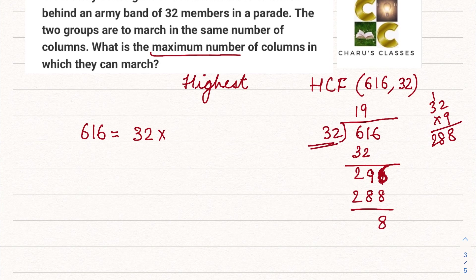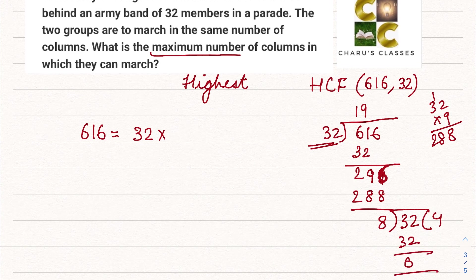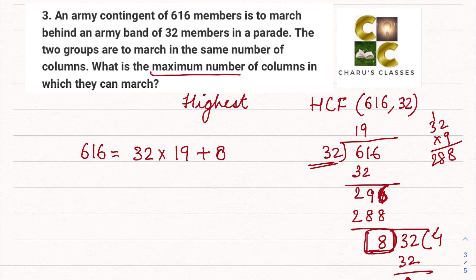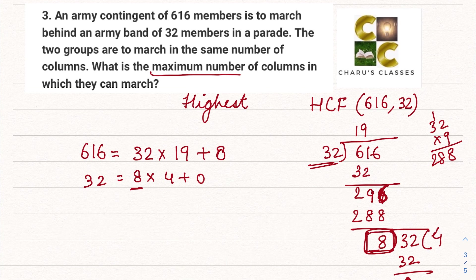Now 32 will become the next dividend. So 8 fours are 32 and our remainder is 0. So 616 can be written as 32 into 19 plus 8. And 32 can be written as 8 into 4 plus 0.